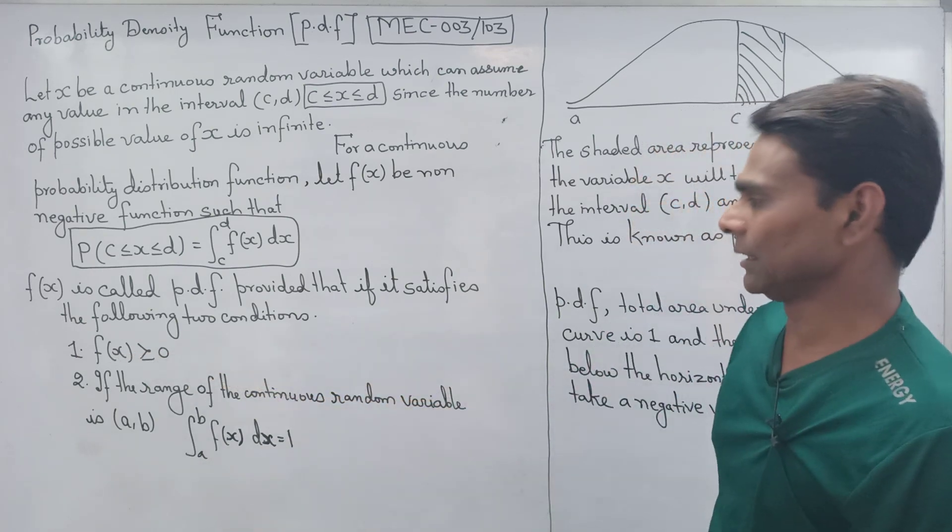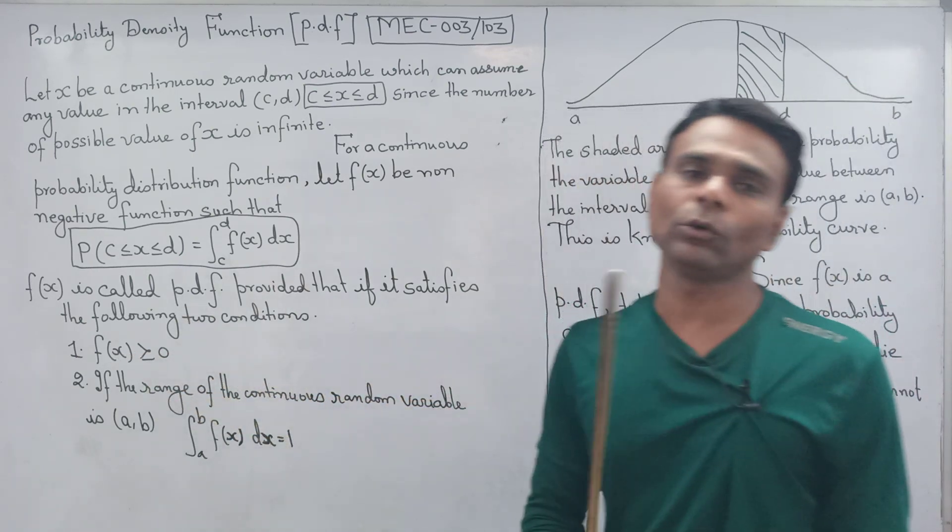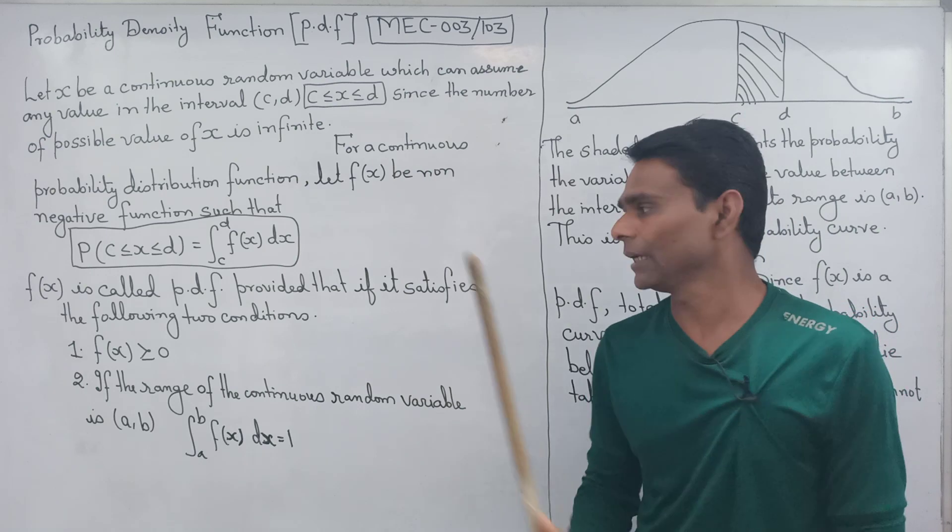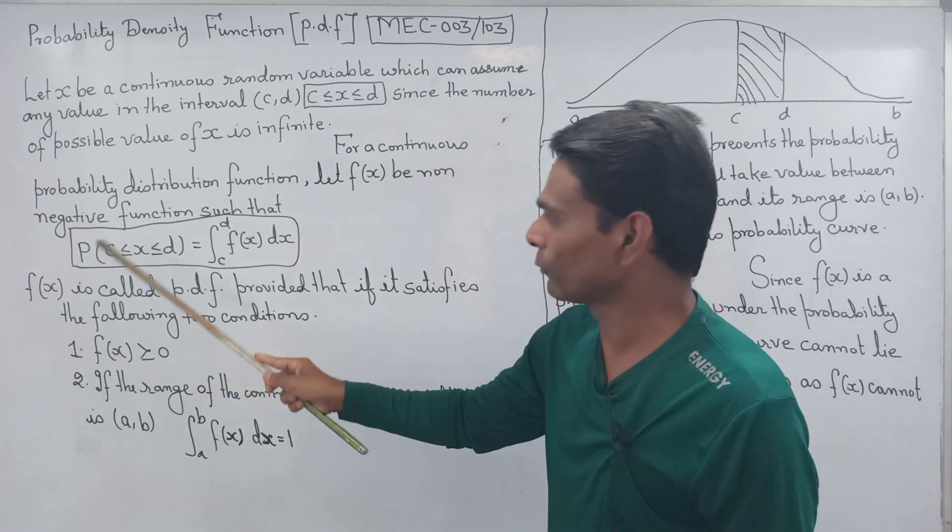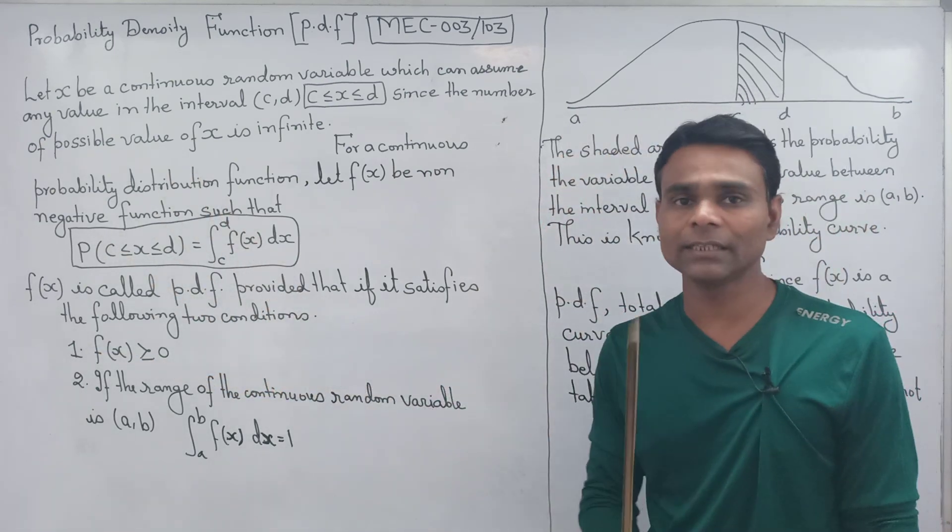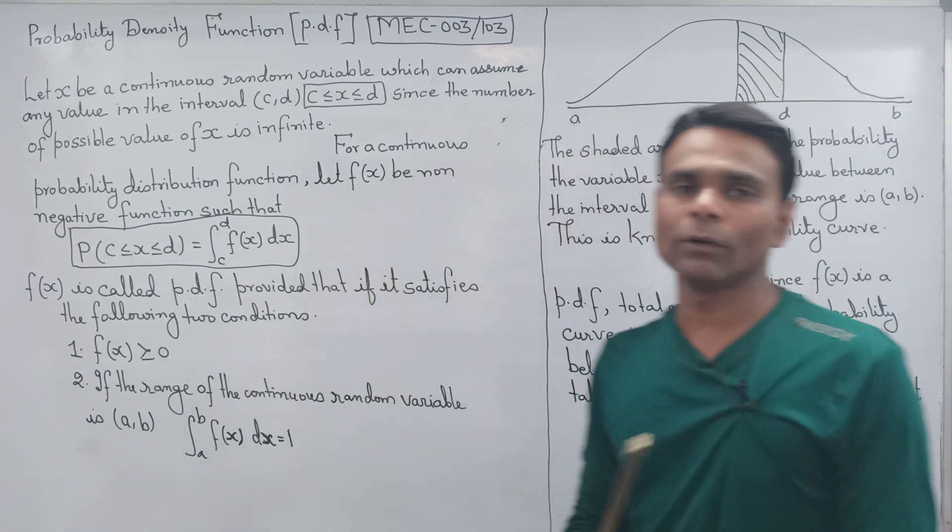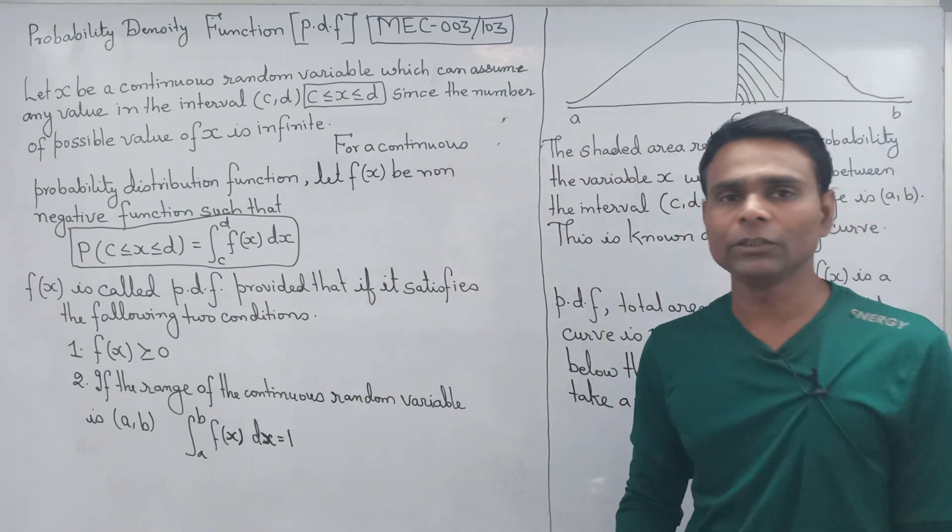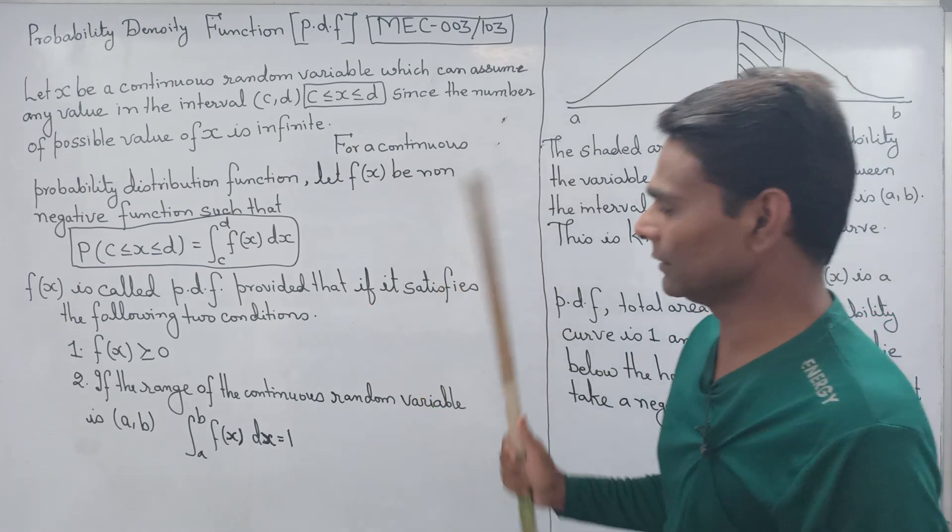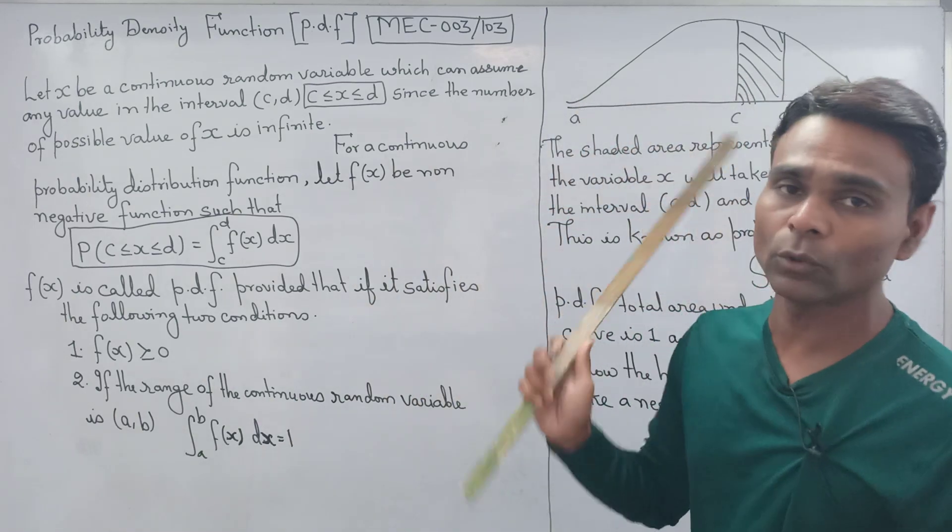FX greater than or equal to 0. This means the probability density function is non-negative. Its value will be either equal to 0 or greater than 0, but not negative. It will always be non-negative.